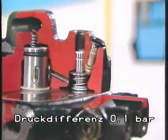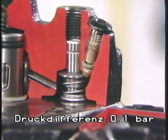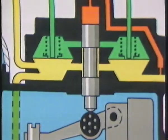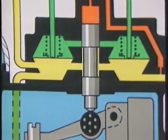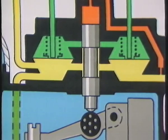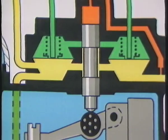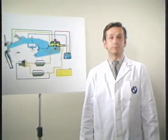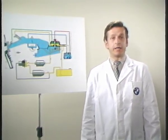Die Differenzdruckventile stellen einen Druckunterschied von 0,1 Bar her. Der Druck im Gehäuseunterteil ist um 0,1 Bar höher als im Oberteil. Dadurch bestimmt nur die Schlitzgröße und nicht die Toleranzen im Systemdruck oder im Öffnungsdruck der Einspritzventile die Durchflussmenge. Um die Gemischzusammensetzung den unterschiedlichen Betriebszuständen des Motors anzupassen, sind noch einige Korrektureinheiten nötig.